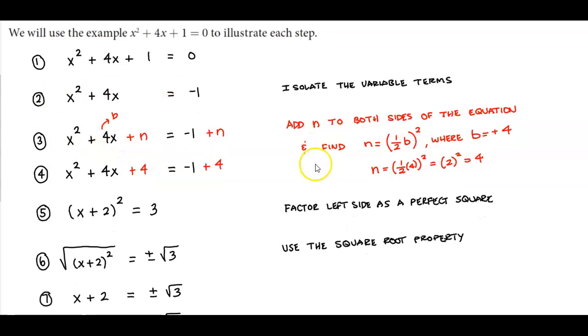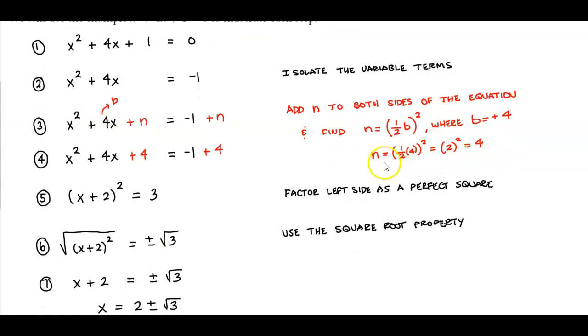Now adding n, we need to find when n is equal to one half of b squared. Now if we look at the value of b here, b represents the number plus 4. So b is equal to plus 4. So now let's solve for n. n is equal to one half of 4 squared, and one half of 4 is 2. Now if we take 2 and then square it, it gives us 4. So now we can replace n to be 4.